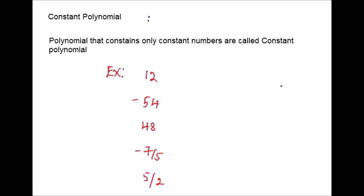The fourth type is constant polynomial. Polynomials that contain only a constant term are called constant polynomial. For example, you can have any number like a positive number, negative number, or fraction — it is considered as a constant polynomial.